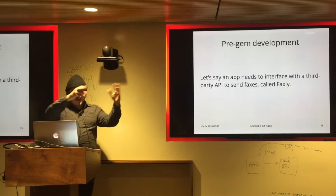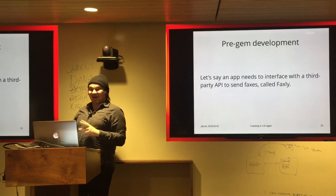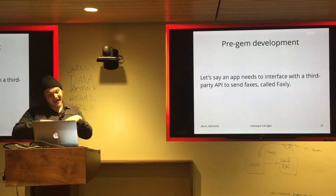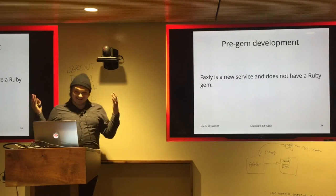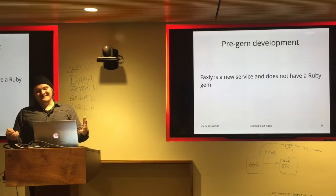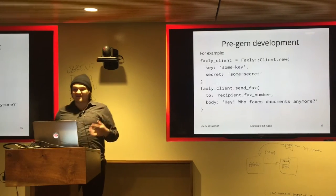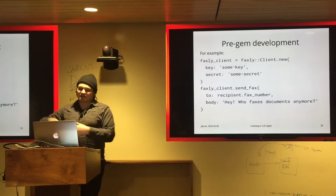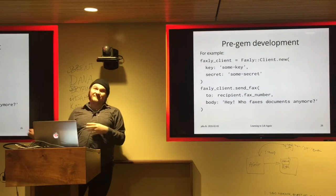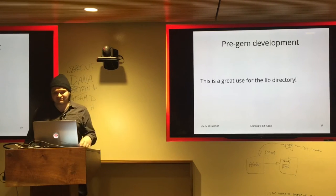Here's a hypothetical application — my brand new startup whose core business value is helping you send faxes. It uses a third-party service called Faxly, because there's a service for everything. They're so new and they're a Node shop — they don't have a Ruby gem, just an NPM package, which was a big bummer. It would be so nice if there was a gem to make working with their fax API easier instead of raw net HTTP calls everywhere. So you should put it in the lib directory.